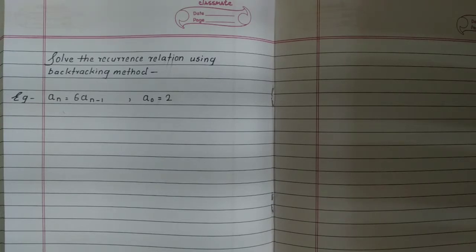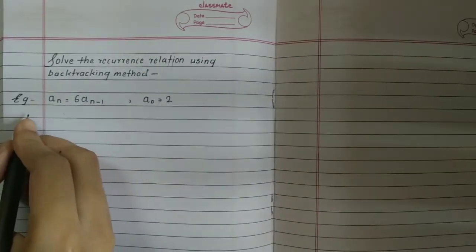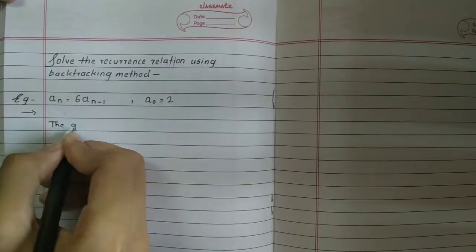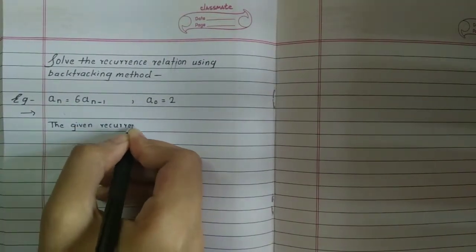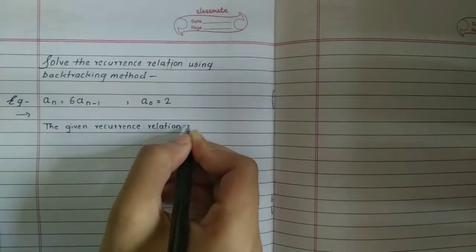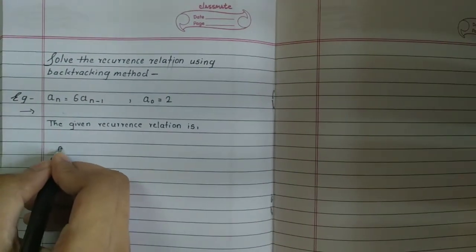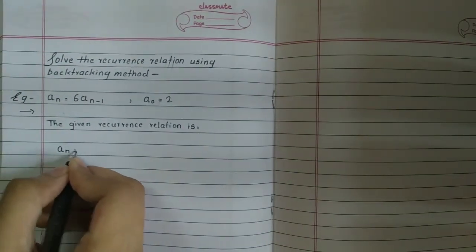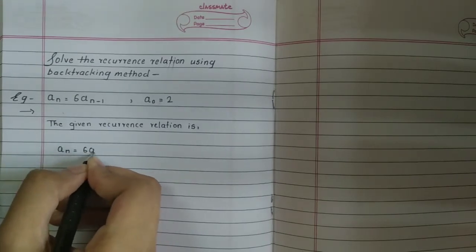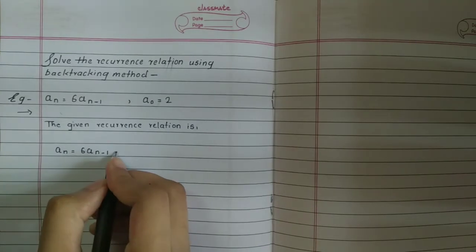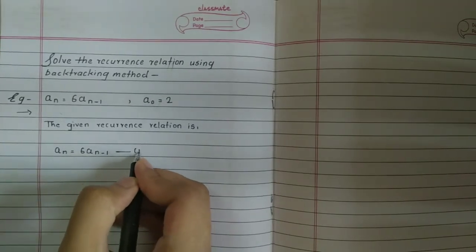We have to solve this recurrence relation using the backtracking method. The example is: aₙ equals 6aₙ₋₁, and the value of a₀ is 2. The given recurrence relation is aₙ equals 6aₙ₋₁. We will call this equation number 1.